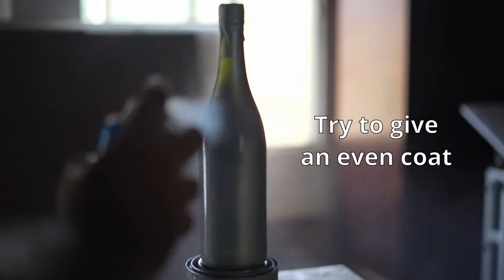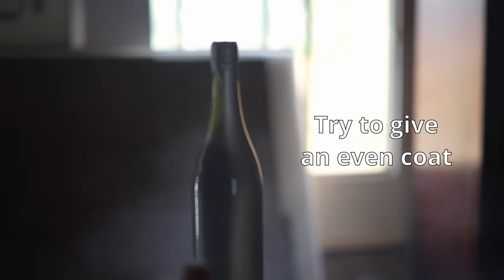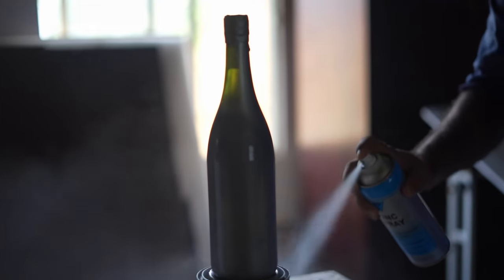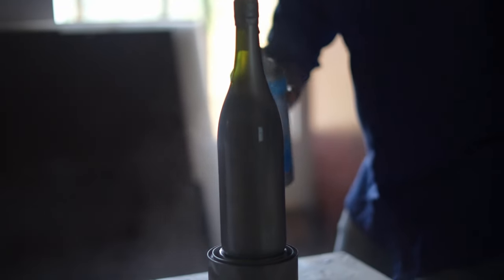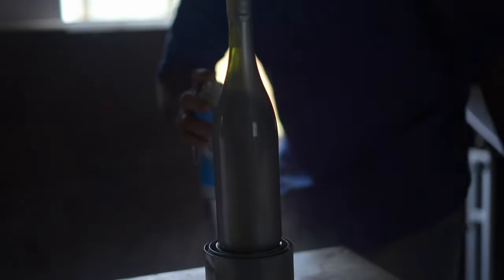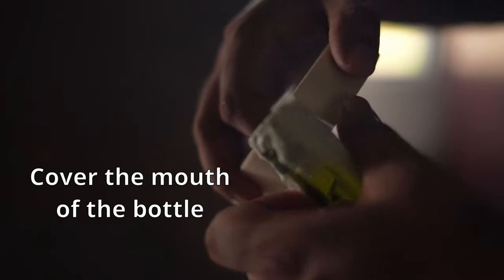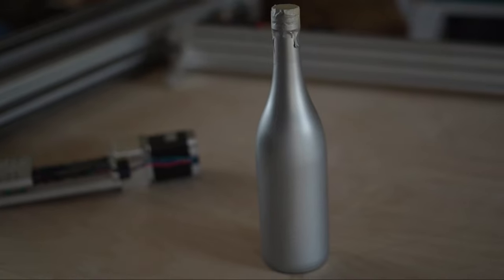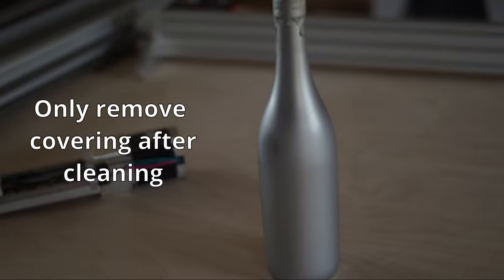Now, while painting, try to give it an even coat as much as possible. If you are using spray paints, try to turn the bottle around to get an even coat or you can go around the bottle. Also, it's not necessary to cover the entire bottle. If you know how much space your design needs, you can paint just enough to cover the area for the design. Another important thing to keep in mind is that if you plan on using the bottle to store wine or anything, make sure you cover the mouth of the bottle well with some masking tape before painting. This is to prevent any paint from getting inside. And also, only remove the covering after you are done cleaning.